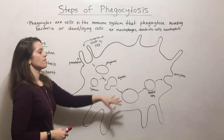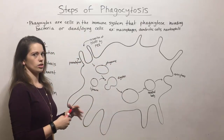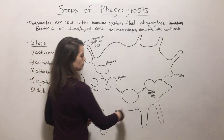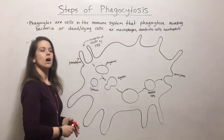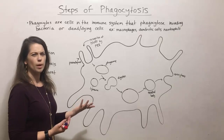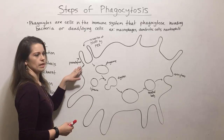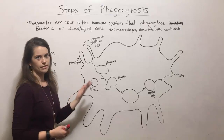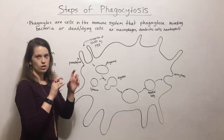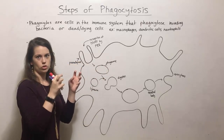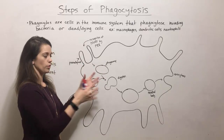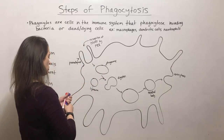Here I have a phagocyte drawn, just a generic one. All of these projections that come out of the cell are called pseudopodia, or pseudopods — pseudopod being singular. Pseudopodia means 'false feet,' which is where the name comes from. They're basically these finger-like projections that the cell uses to engulf and bring in the thing it's going to destroy.